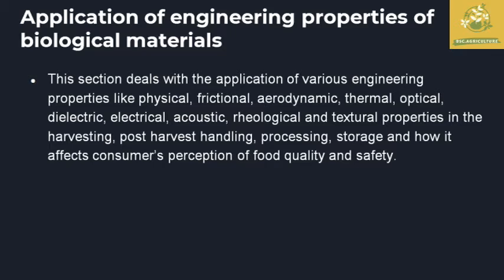Now we look at the application of engineering properties with biological material. There are various engineering properties, including physical, frictional, aerodynamic, thermal, optical, electrical, and post-harvest handling and processing storage properties. Consumer perception of food quality and food safety are also recommended to be maintained through the engineering properties of biological material, which guide the creation of various equipment.